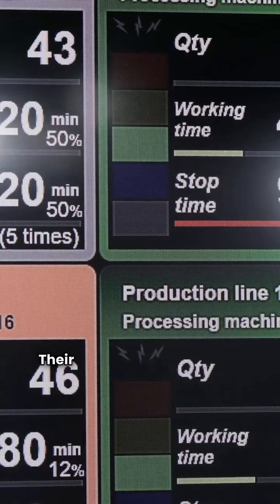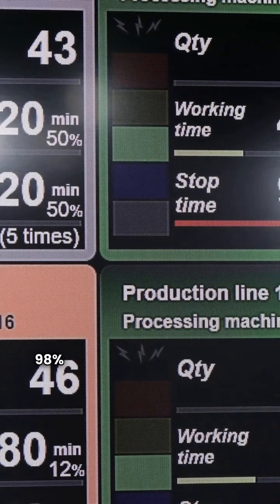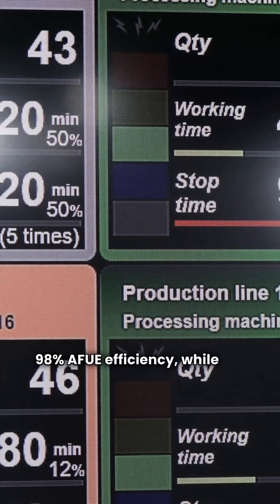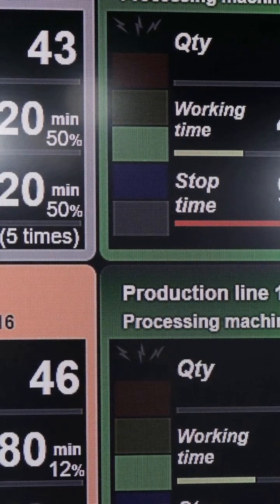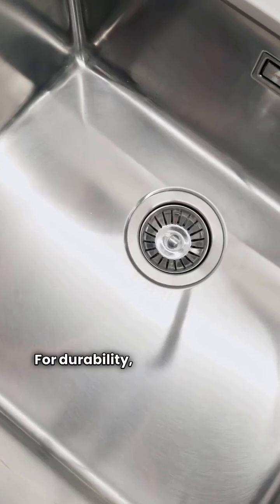Look at the numbers. Their Vitodens 200W model hits an incredible 98% AFUE efficiency while the Vitodens 100W and Vitocrossal 300 are both at 95%. For durability,